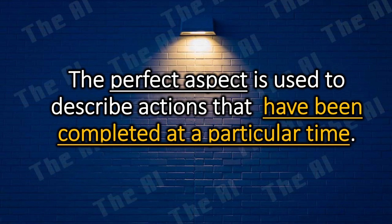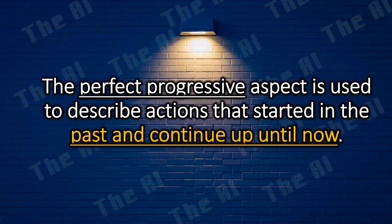The perfect aspect is used to describe actions that have been completed at a particular time. The perfect progressive aspect is used to describe actions that started in the past and continue up until now.